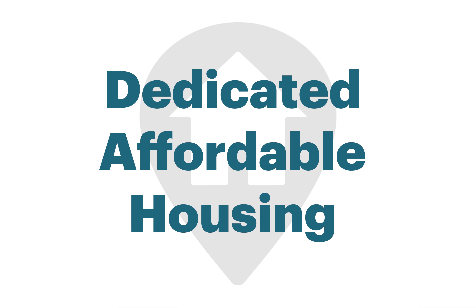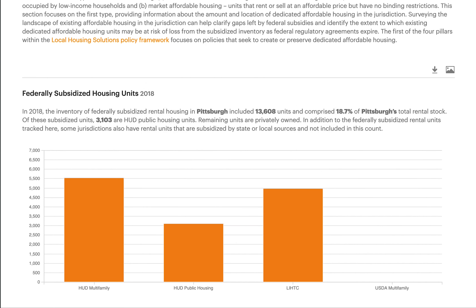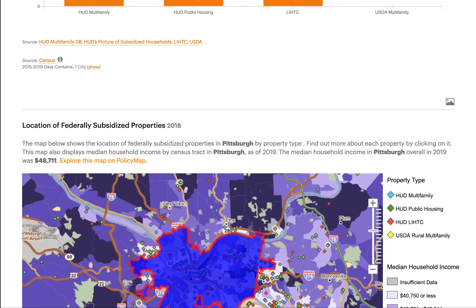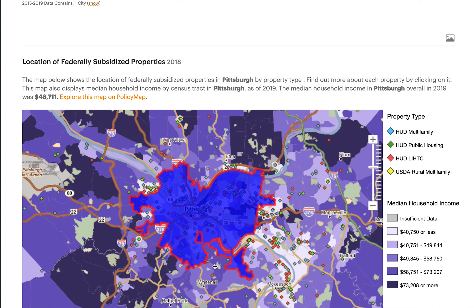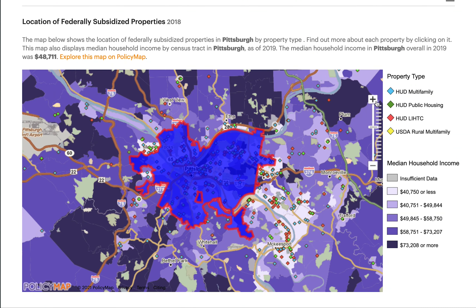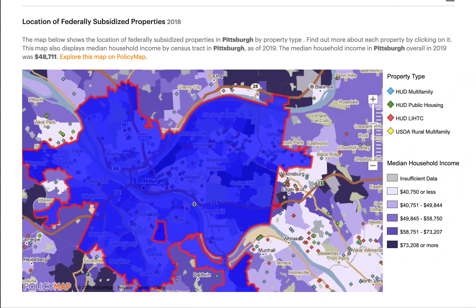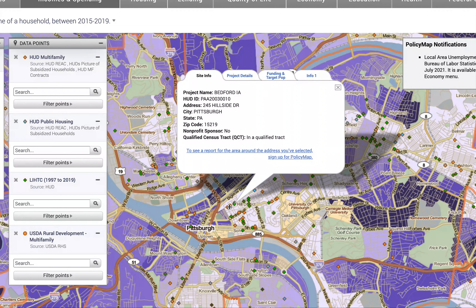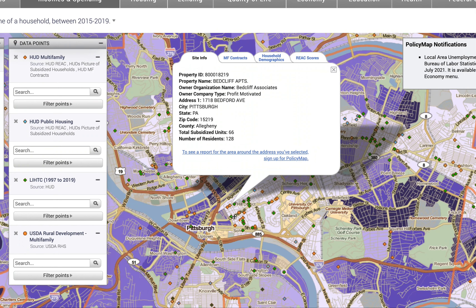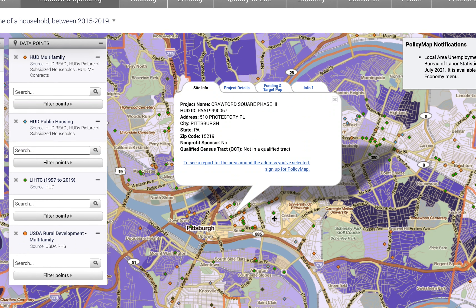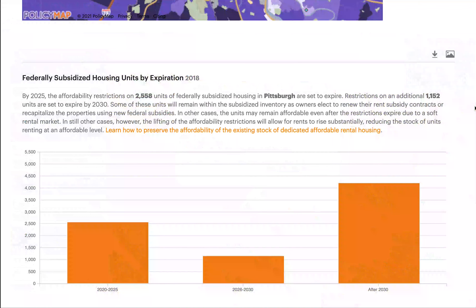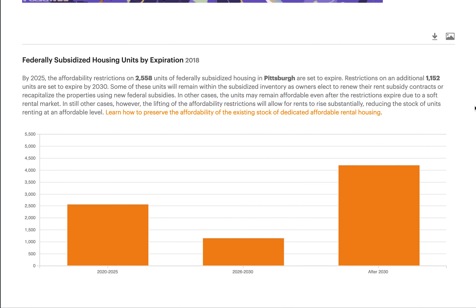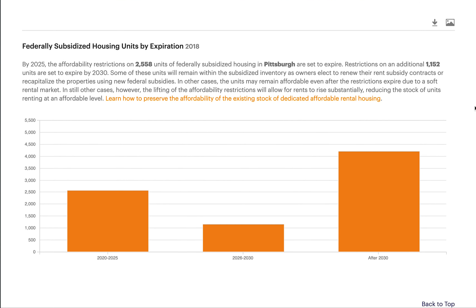The dedicated affordable housing section identifies key data points: how many federally subsidized units are in your locality and where are they located — you can zoom in on the map to show tax credit or other federally subsidized property locations. It also covers how many rental units were built under a government program that required rent and income restrictions in exchange for a government benefit, and how many of these dedicated affordable units will expire out of affordability requirements within the next few years.